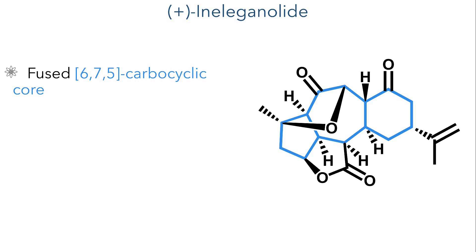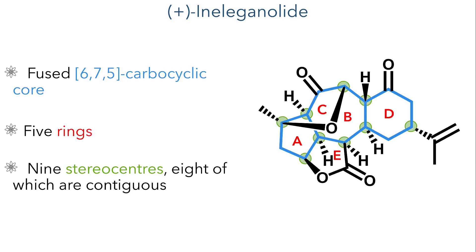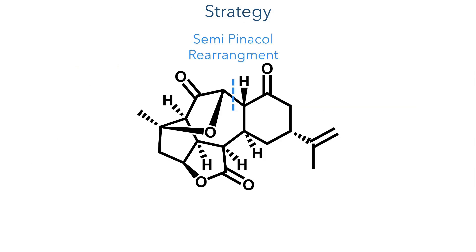Ineleganolide has quite a complex structure, consisting of a fused 6-7-5 carbocyclic core, which is part of a pentacyclic structure. This structure contains nine stereocenters, eight of which are contiguous. The strategy that the Stoltz Group used in this synthesis has taken more than 20 years to develop, and features several highly creative and unexpected transformations.